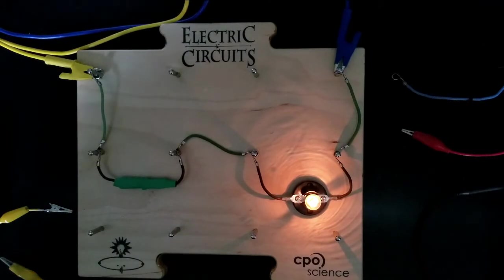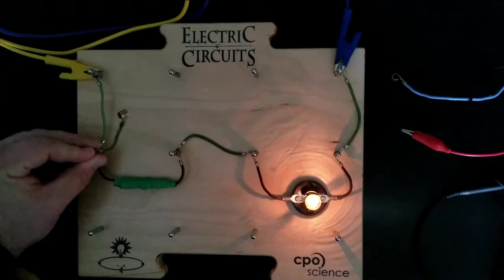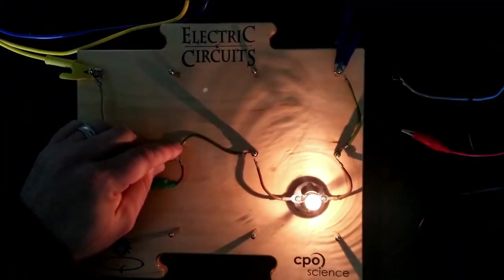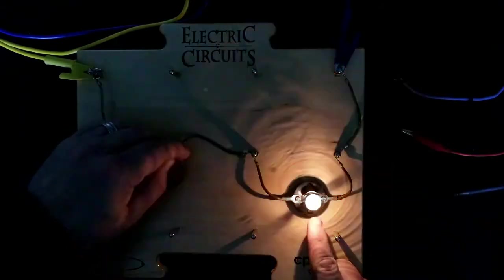I can short that circuit, short the resistor, by connecting a wire like this. And you'll notice that when I bypass the resistor that the light bulb gets brighter.